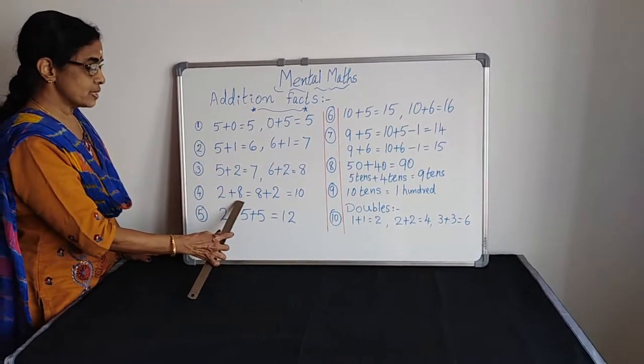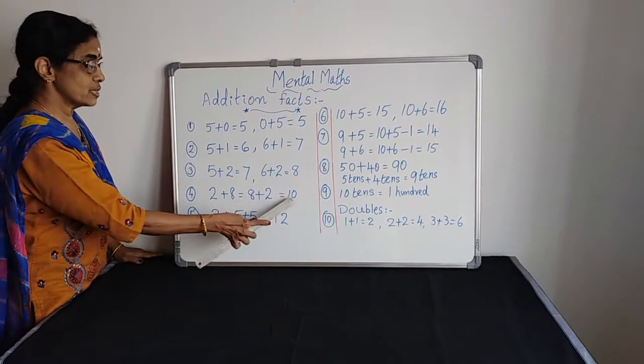Rule 4: 2 plus 8 equals 8 plus 2, which is equal to 10.